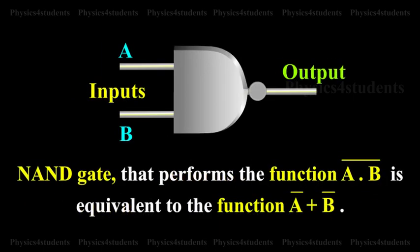And NAND gate that performs the A and B, the whole complement, is equal to the function A complement or B complement.